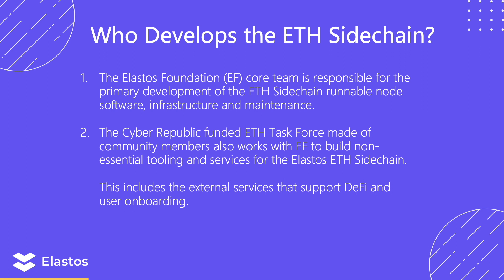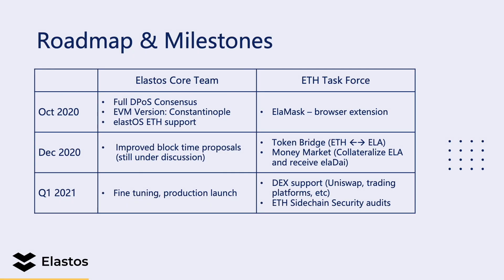This includes external services that support DeFi like oracles and token bridges that help with user onboarding. For our roadmap and milestones, the Elastos core team and Ethereum Task Force will work hand-in-hand to ensure all work complements each other. For the Elastos core team, by end of October we hope to have full DPoS consensus done, and we also hope to upgrade the EVM version to Constantinople — currently it's on the older Byzantium version. We also expect the Elastos team to have full Ethereum support in their application, wallet, and plugins.